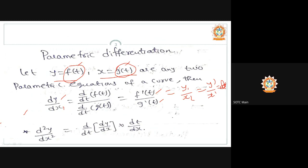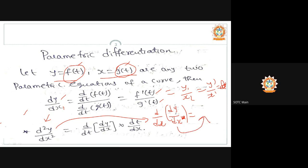This gives us the first-order derivative dy/dx. For the second-order derivative d²y/dx², we write it as d/dx of (dy/dx). Since dy/dx is itself a function of t, we differentiate it with respect to t and then multiply by dt/dx. So d/dx of (dy/dx) equals d/dt of (dy/dx), and then we multiply by dt/dx.